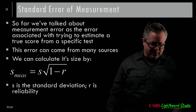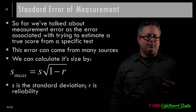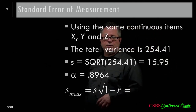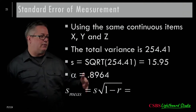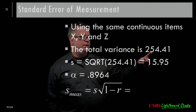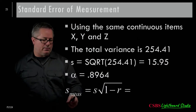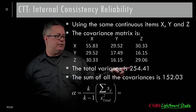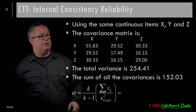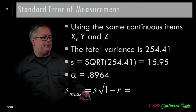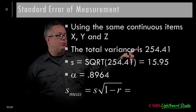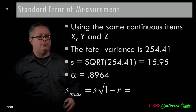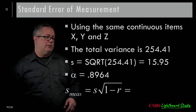That gives us the standard error of measurement — how much error there is in the measure, expressed on the same scale as the items. Using our continuous items, the total variance was 254.41. Taking the square root gives a standard deviation of 15.95 for the scale.